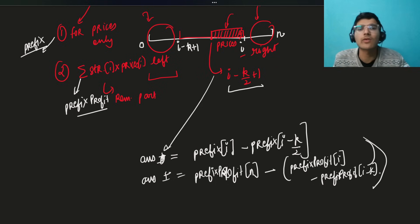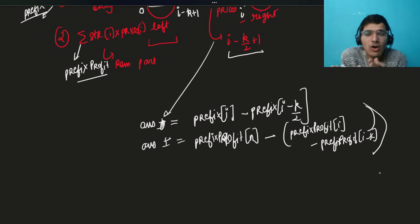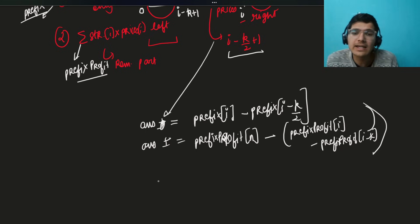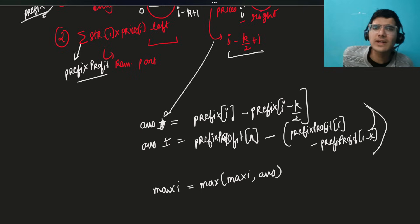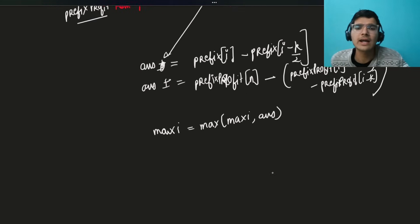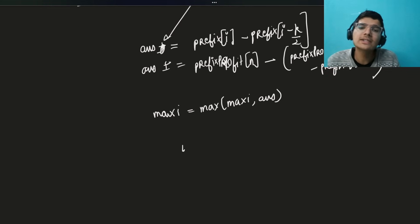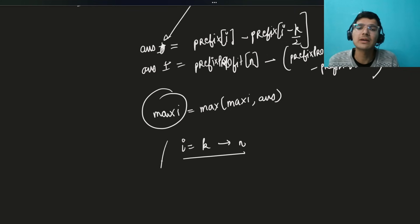This gives the total answer for the current window position. We just slide the window — every i is changing — and maximize: maxi equals max(maxi, answer). We start i from k and iterate to n, keep updating the maximum, and finally return the maximum.